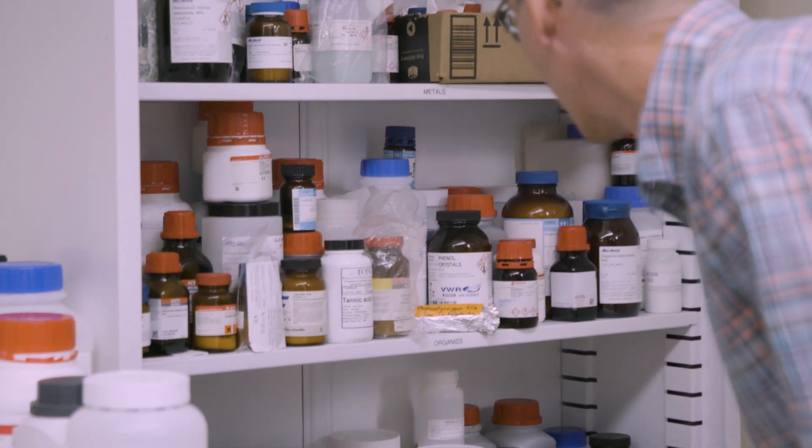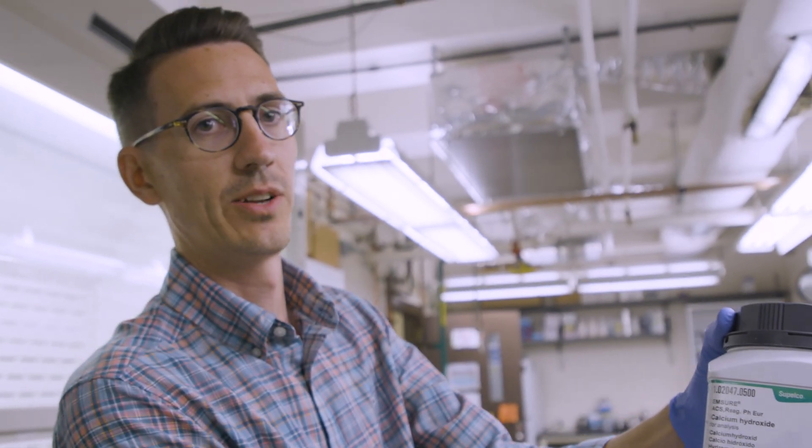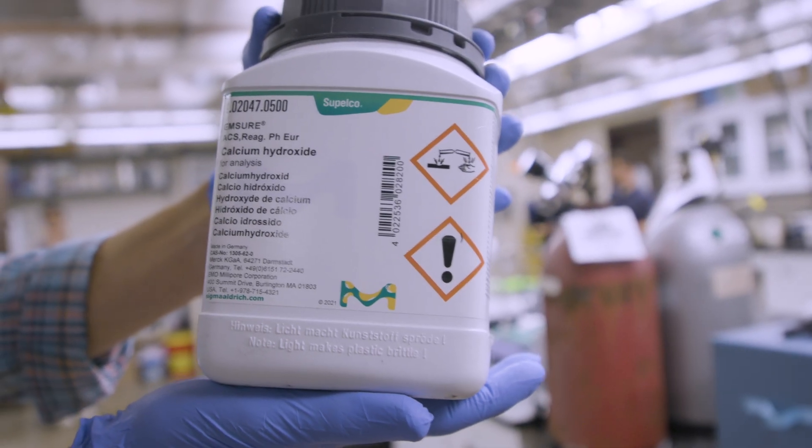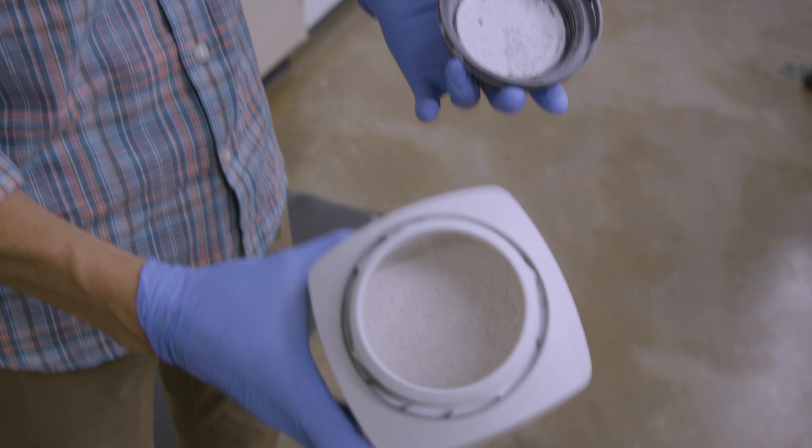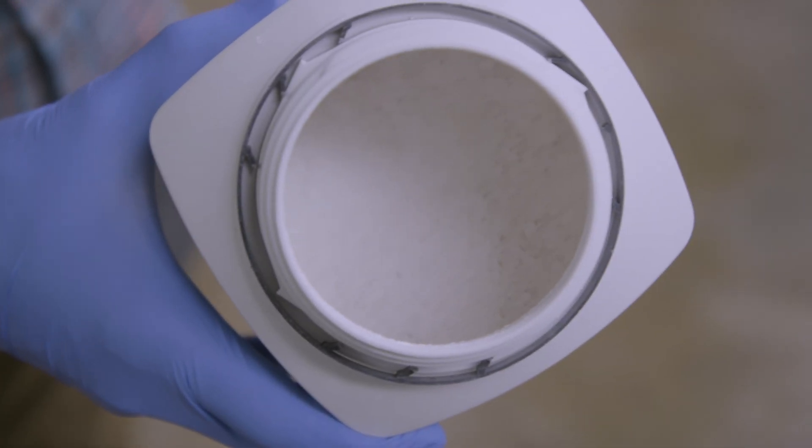We're using a very commonly available chemical—this is calcium hydroxide, also known as hydrated lime. Typically, PFAS requires around a thousand degrees Celsius in order to break it down completely, and with the additive that we can put in, we are able to do this at less than 500 degrees Celsius.